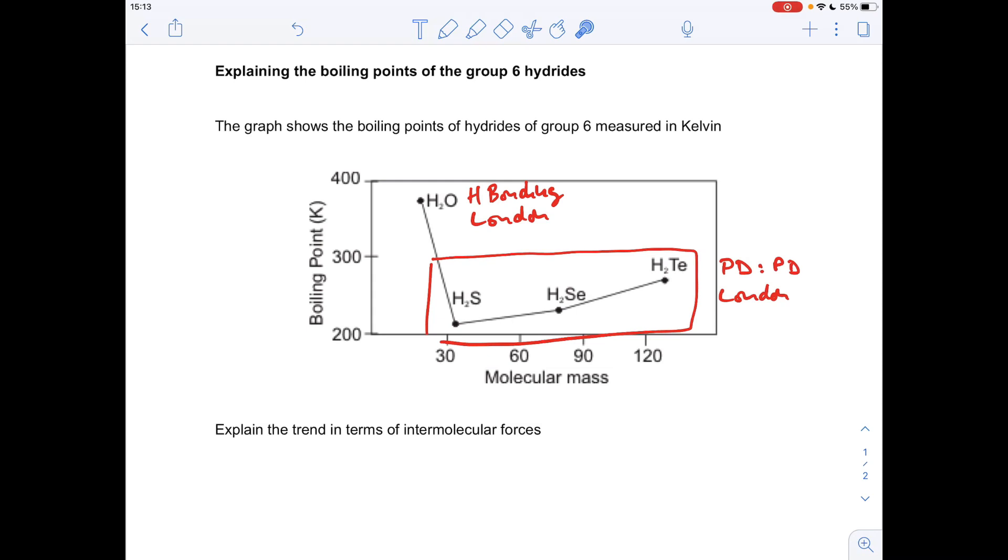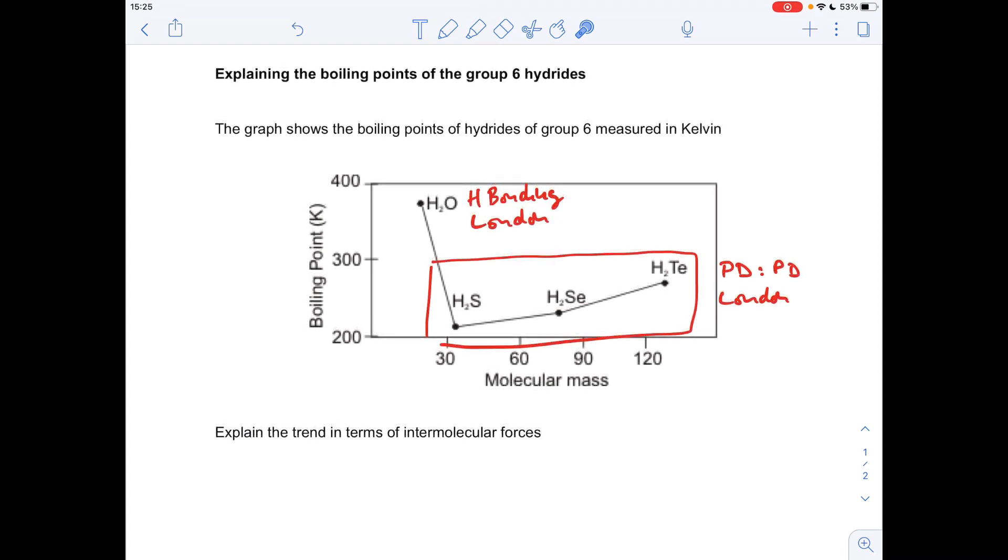We can't class them as hydrogen bonding because the group 6 atom isn't electronegative enough. So these are just permanent dipole-dipole interactions. And of course they've got London forces as well because they're made from electrons.